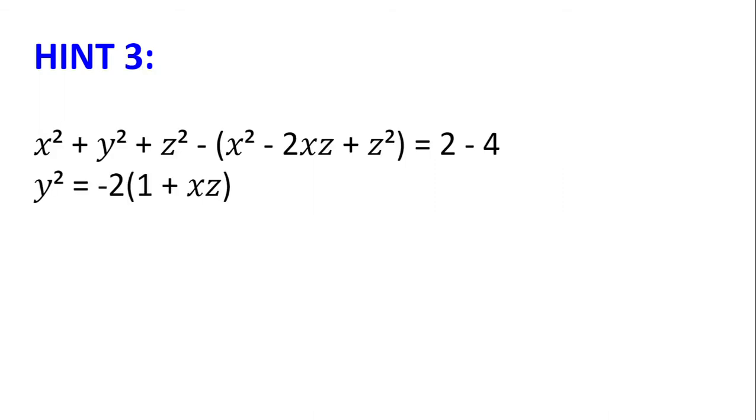Hint number 3: x squared plus y squared plus z squared minus x squared minus 2xz plus z squared is equal to 2 minus 4. We can simplify this to get y squared plus 2xz equal to minus 2, or y squared is equal to minus 2 multiplied by 1 plus xz.